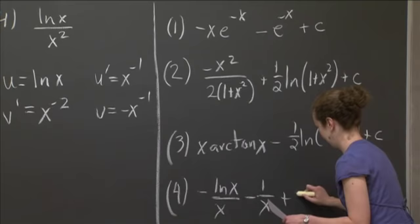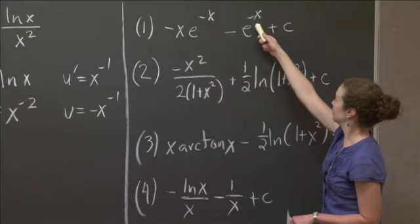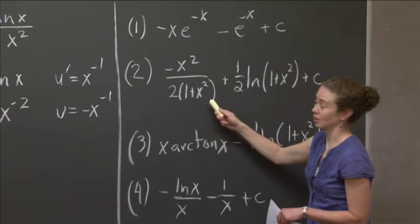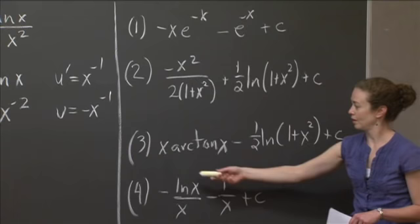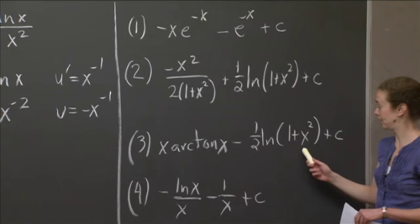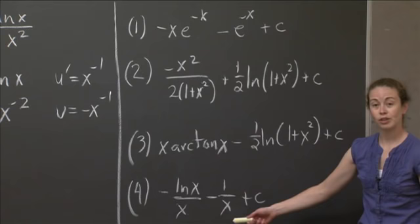So let's just go through. In number one, we get negative x e to the minus x minus e to the minus x plus c. Number two, we get negative x squared over 2 times 1 plus x squared, plus 1 half natural log of the quantity 1 plus x squared, plus c. Three is x arc tan x minus 1 half natural log of the quantity 1 plus x squared plus c. And four is negative natural log x over x minus 1 over x plus c.